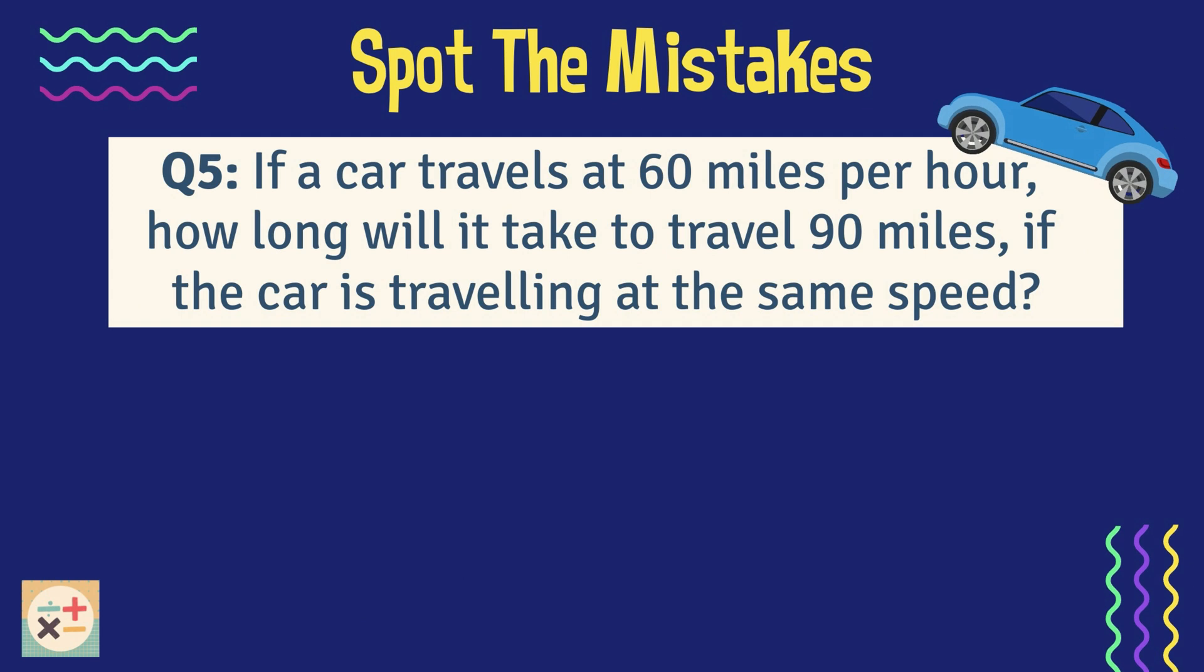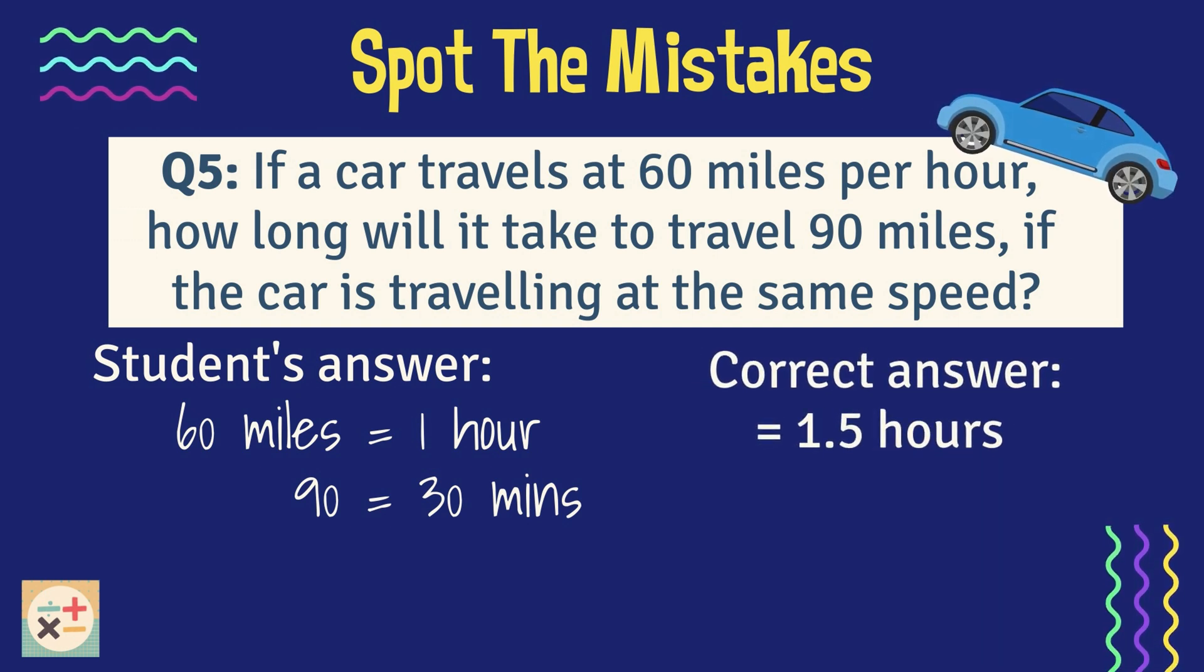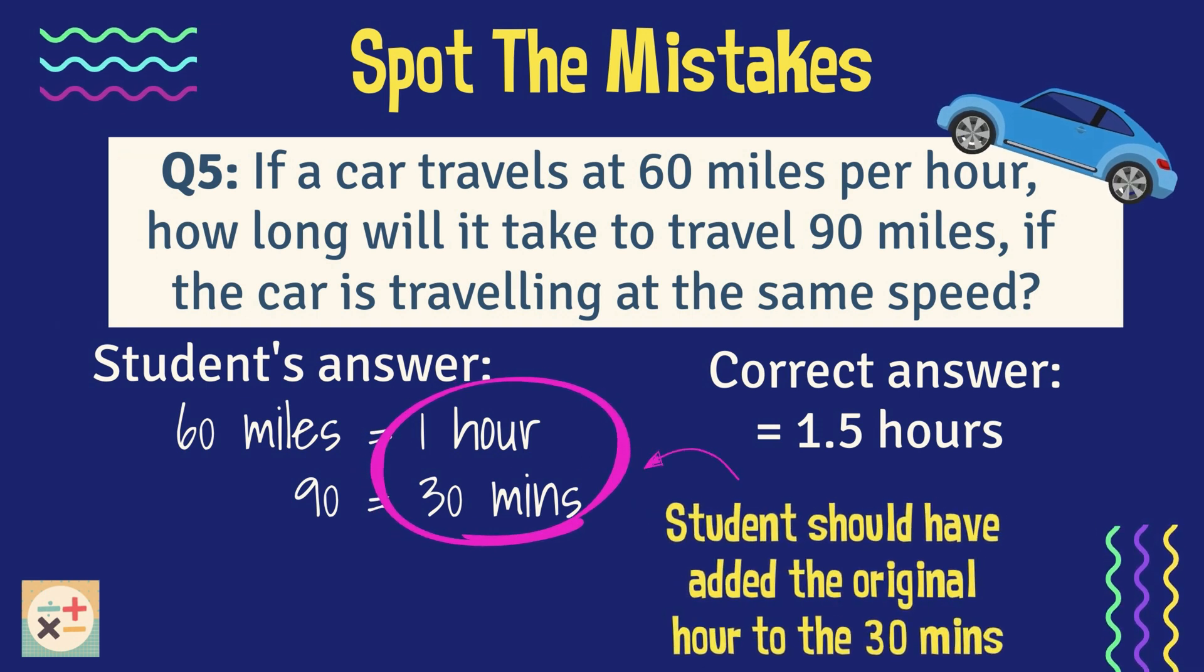Question 5. If a car travels at 60 miles per hour, how long will it take to travel 90 miles? Take a look at the student's answer to identify the mistake. The correct answer to this question is that it would take 1.5 hours, or 90 minutes, for the car to travel 90 miles. Here the student hasn't noted down any of their workings out, making it difficult to see exactly where they went wrong. It seems they had correctly noted down that in 1 hour the car would travel 60 miles, and then worked out it would take an additional 30 minutes to travel the 90 miles. However, it looks as though they forgot to add up these two timings.